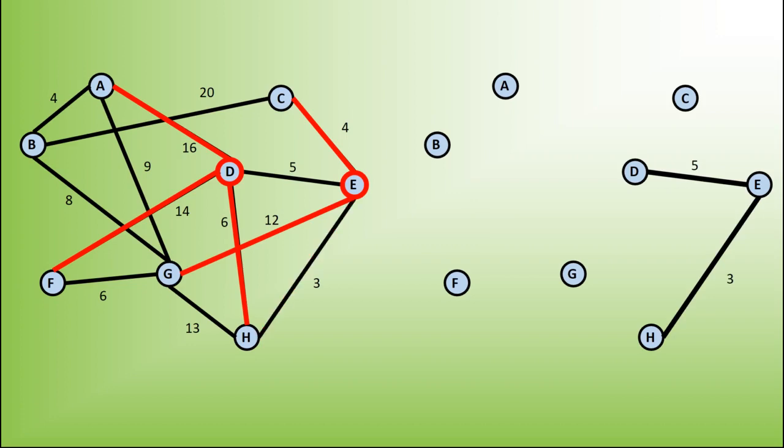I now don't need to consider that edge, but I have added H to my minimum spanning tree, so I need to consider edges from H as well. This adds the edge from G to H but also removes the edge from D to H — I don't need to consider that one anymore because D is already part of my minimum spanning tree. Again in red are all the edges I need to consider. Here 4 is the minimum weight, so I'm going to include that one from C to E.